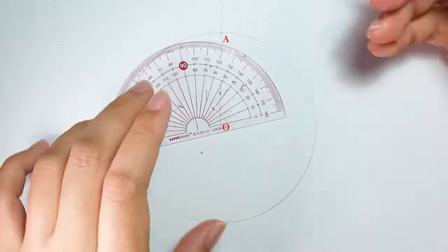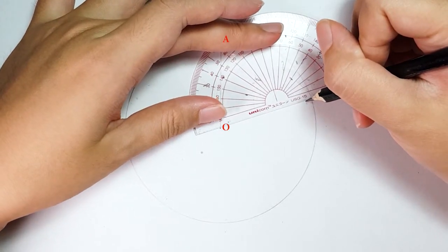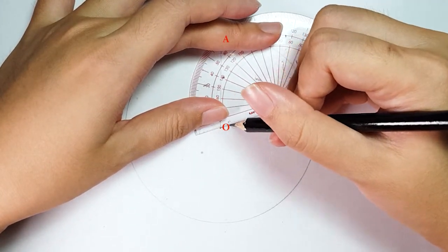draw a radius line with your ruler from point O through the mark and land on the circumference of circle.